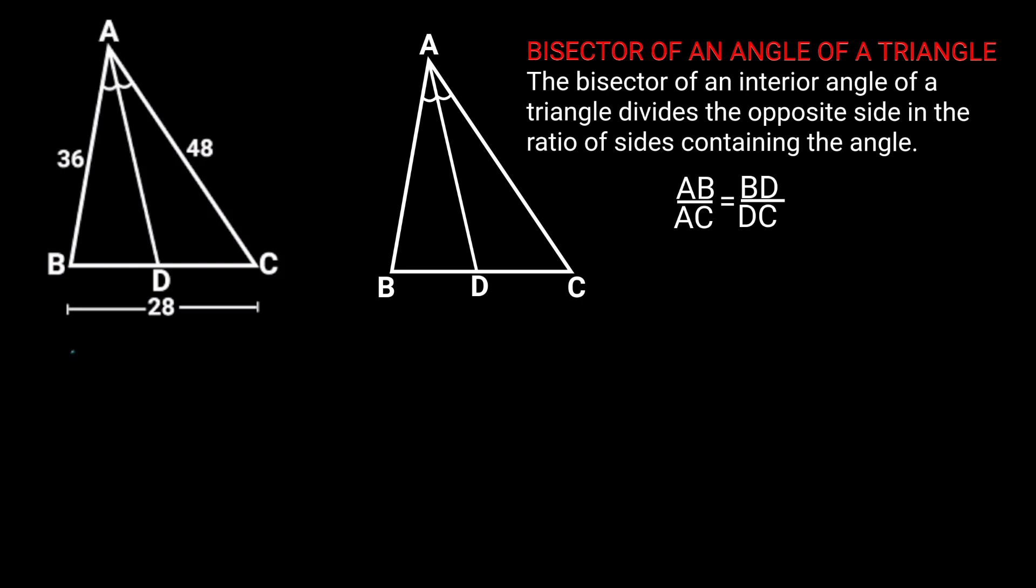From the diagram, if AD is the internal bisector of angle BAC of triangle ABC, then AB over AC is equal to BD over DC.